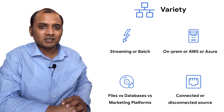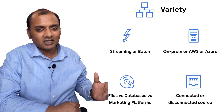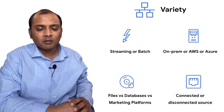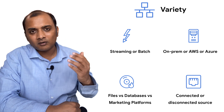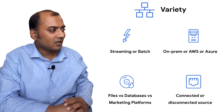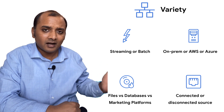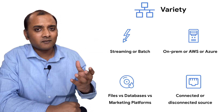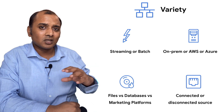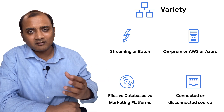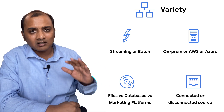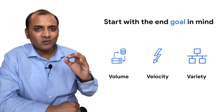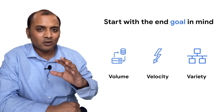The third parameter is variety — variety of source data and how you want to ingest it. This includes whether the data is streaming or batch, whether it is coming from an on-premise system, from AWS, Azure, or any other system. It also includes the data type: a flat file, CSV, JSON, a database, or an API call. And the nature of the source matters too — is it a connected source you can ingest online, or a disconnected remote source requiring offline transfer? All three parameters — volume, velocity, and variety — determine the design of your data ingestion pipeline.